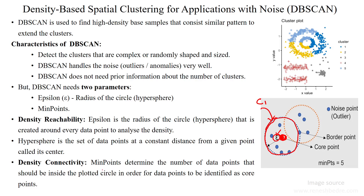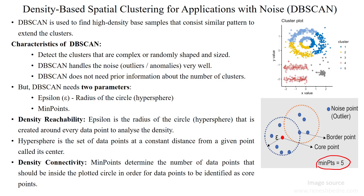We should know the minimum number of data points to determine how many points should be inside the plotted circle to perform clustering. If the minimum number of data points is set to five, then a cluster should have at least five data points inside it, including the center. If a circle does not have the minimum number of points, that area cannot be considered a single cluster.